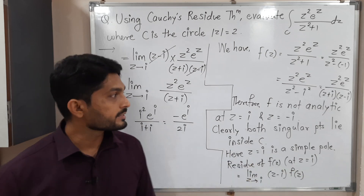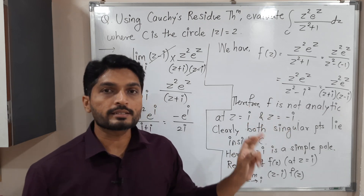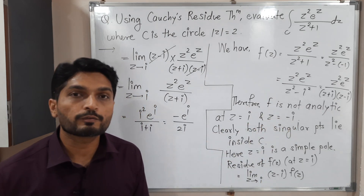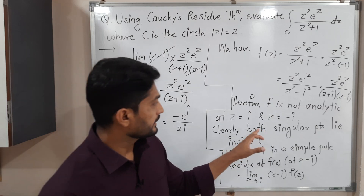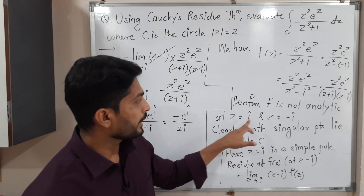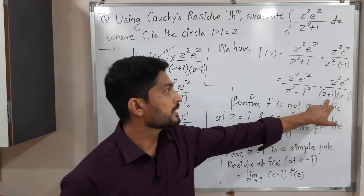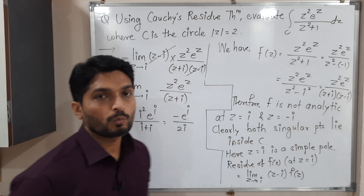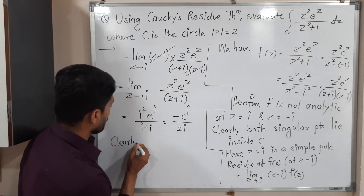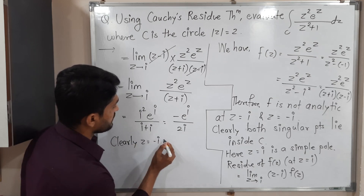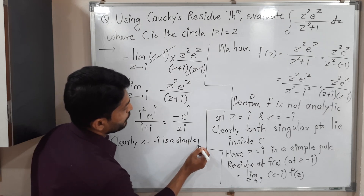Similarly, z = −i is the other singular point inside the circle. Since the factor (z+i) in the denominator also has power 1, z = −i is also a simple pole. We use the same residue formula.